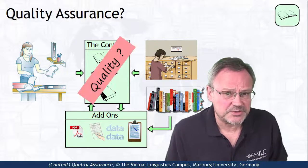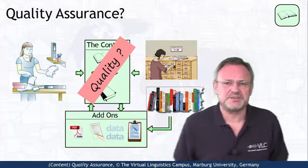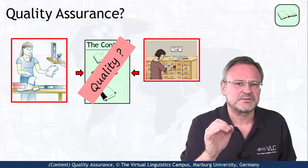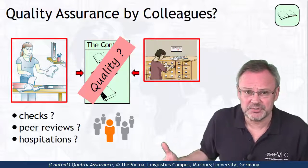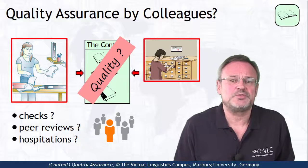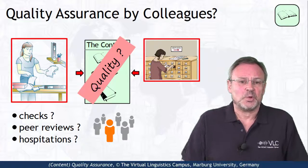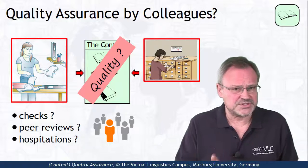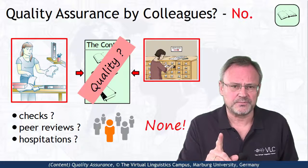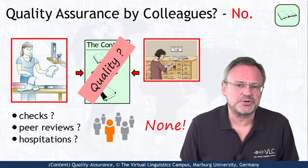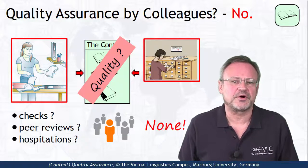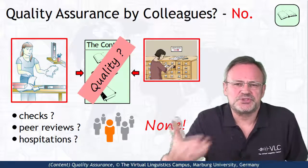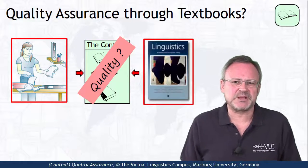And what about the quality of the content? Well, the responsibility for the quality of the stuff you were going to teach lay solely in your hands. Did anyone cross-check your material? Did anyone peer review what you considered to be adequate? Were the colleagues sitting in your class while you delivered your content? All these questions must be answered with a distinct no. You were the only one who assured the quality of the content. The only exception were cases where you used a single peer-reviewed textbook as the backbone of your teaching.